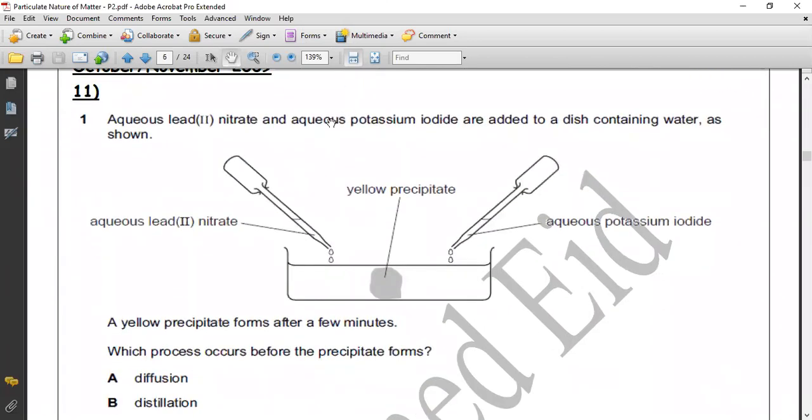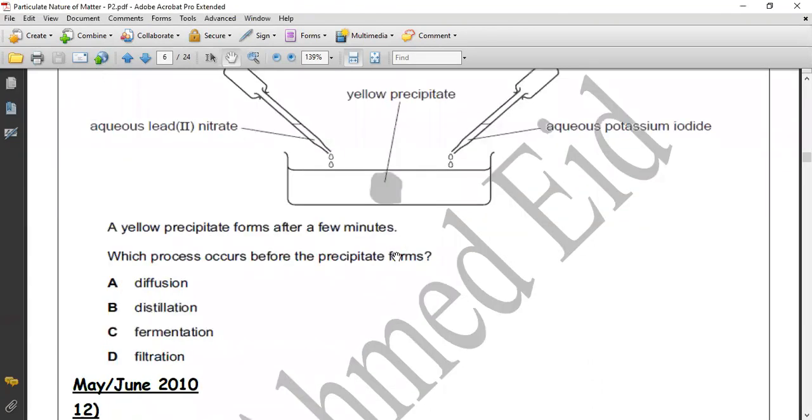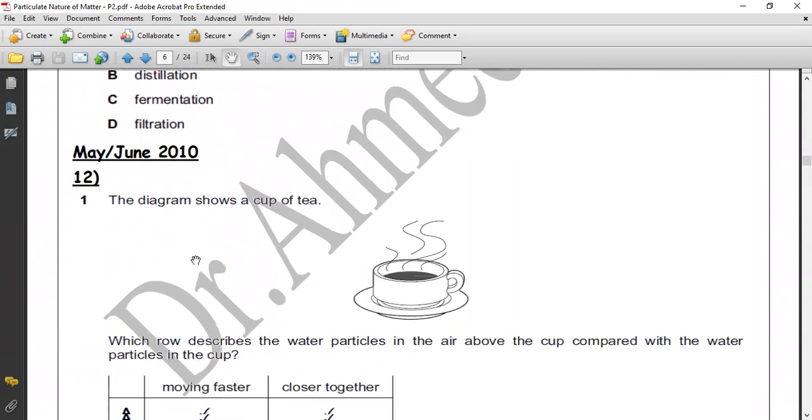Question 11. Aqueous lead nitrate and aqueous potassium iodide are added to a dish containing water as shown. Here lead nitrate Pb(NO3)2, here potassium iodide KI, and yellow precipitate is formed which is PbI2. Yellow precipitate is formed after a few minutes. Which occurs before the precipitate is formed? For the precipitate to occur, these two substances must diffuse, move to each other to form the yellow precipitate. So diffusion is the correct answer. Not distillation, not fermentation, and not filtration.